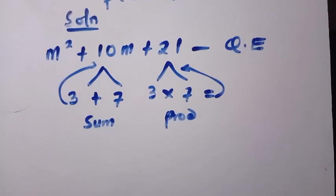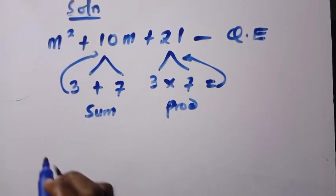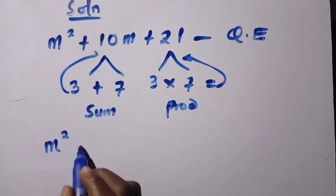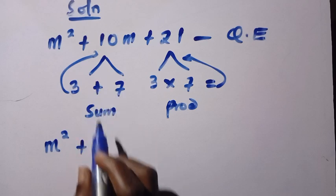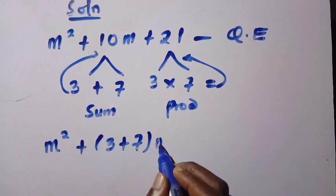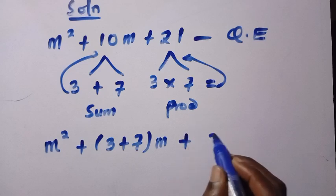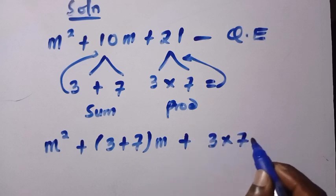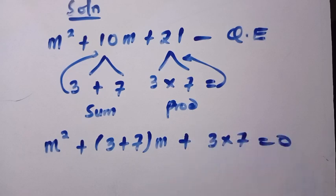Then after getting this, we are going to replace them as we have m squared plus, so instead of 10m, we change it to 3 plus 7, then m in the bracket, plus also we have 3 multiplied by 7, equals 0.